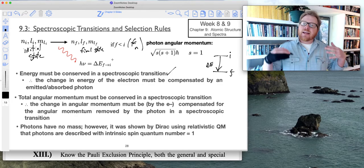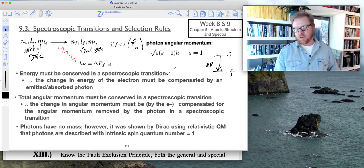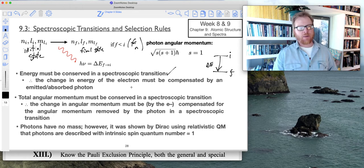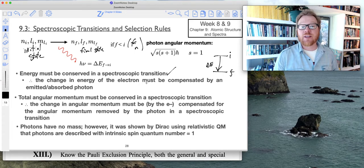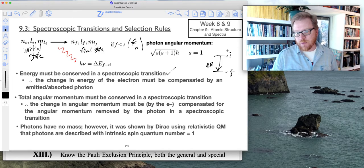Then the light that is being absorbed has to have the same energy as the difference between the two levels. So the change in energy of the electron must be compensated by an emitted or absorbed photon. Remember, this is an electron going through different states.